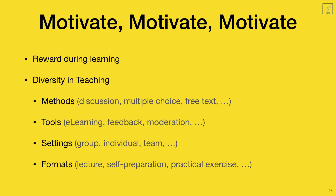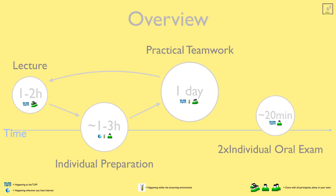One of the courses has typically about ten assignments. Each assignment follows this schedule: it starts with a lecture, then one to three hours of individual preparation inside an e-learning system wherever students have internet, and then one day for the practical part at TUM in our laboratory where they work in teams of two with the physical machines and the e-learning environment.